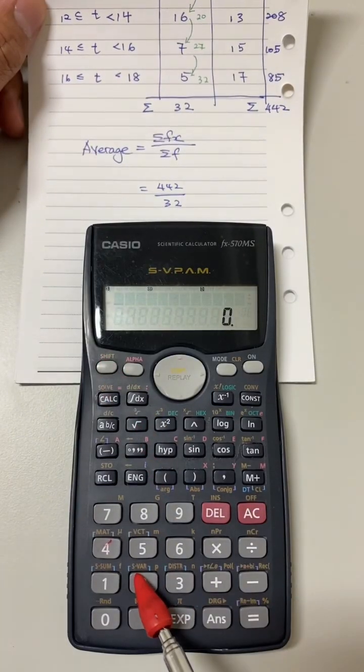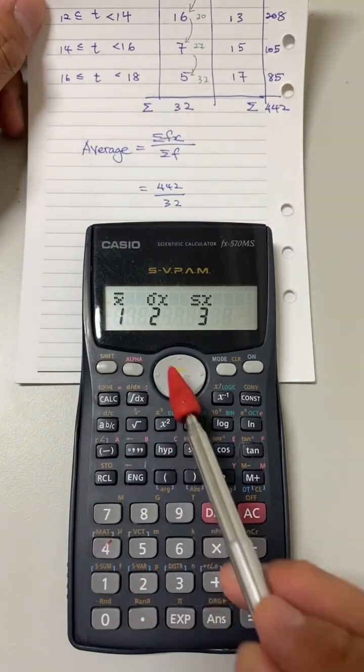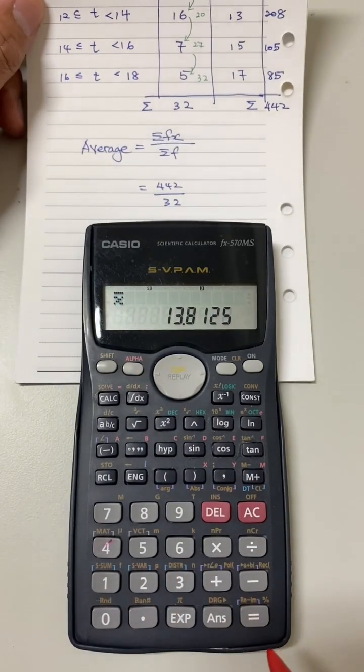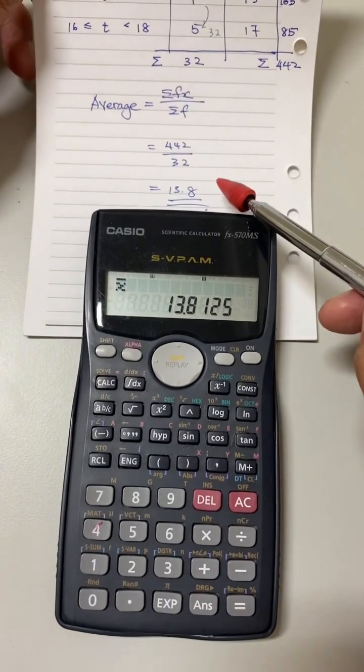Next, press shift 2 to find out the average. Press 1 and press equal. That's the answer we calculated earlier.